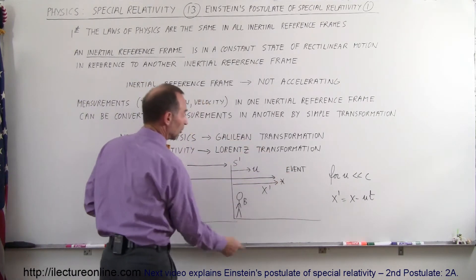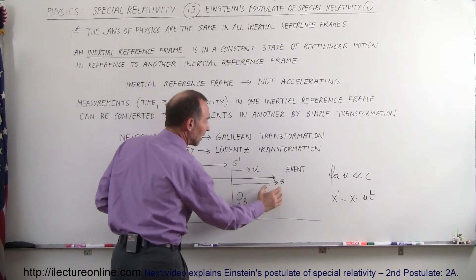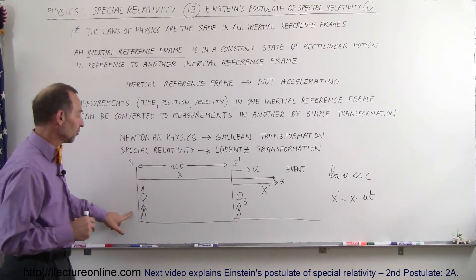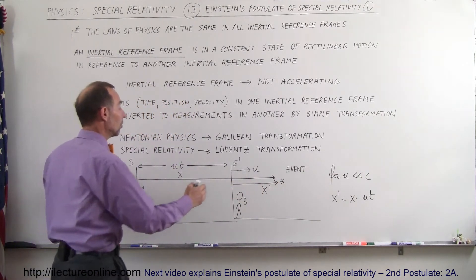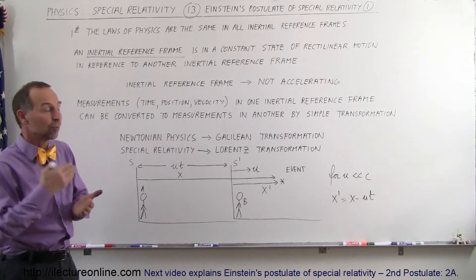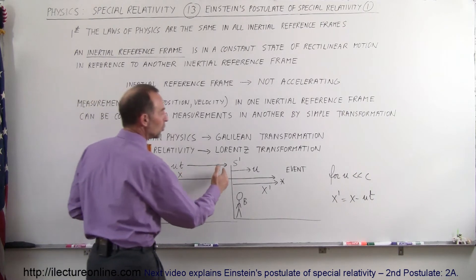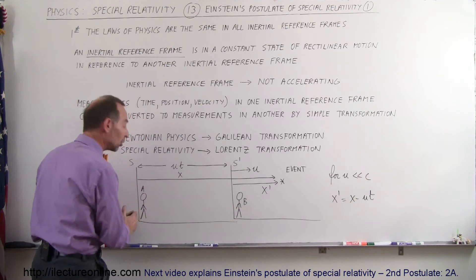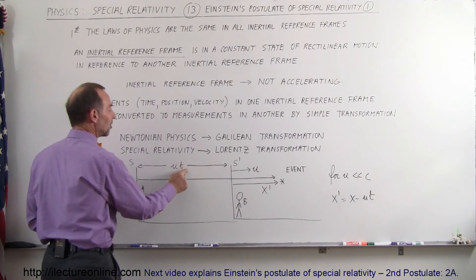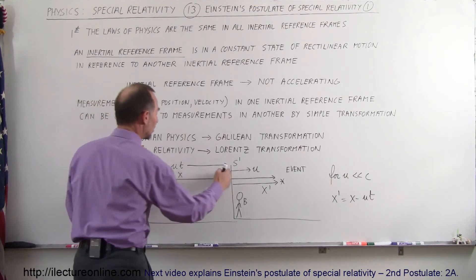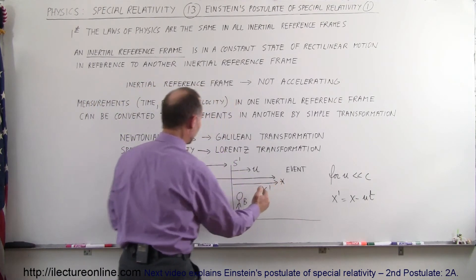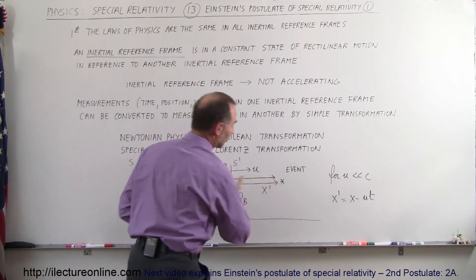Let's say some event happens somewhere in space. Observer B in reference frame S prime measures the distance to that event and calls it x prime. At the same time, Observer A in reference frame S — the stationary reference frame — measures the distance to that event and calls it x. Can we go from one to the other? Can we compare x prime in terms of x, and x in terms of x prime? Yes. Assuming S prime moves away from S at velocity u, after a certain time t has elapsed, S prime will be a distance u times t away from S. Therefore, using the Galilean transformation: x prime equals x minus u times t, which you can clearly see graphically.